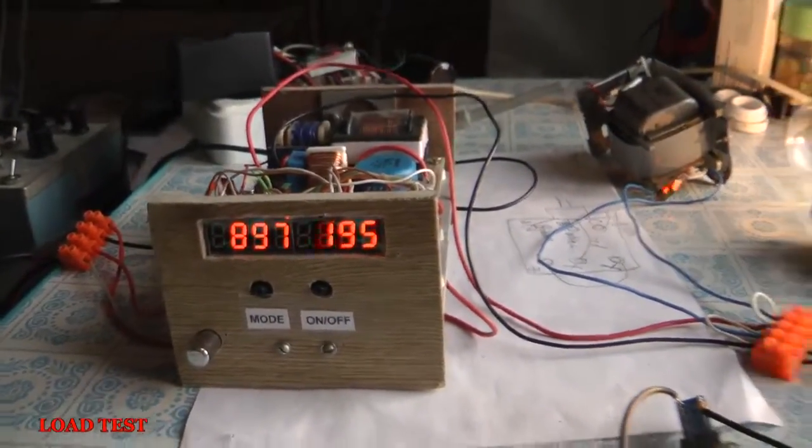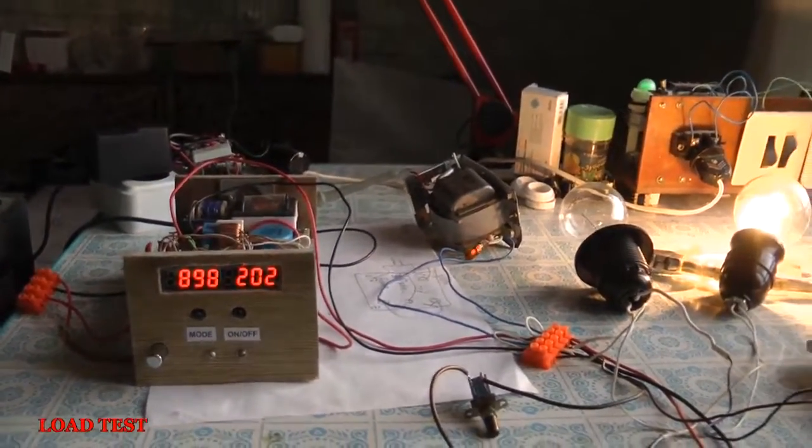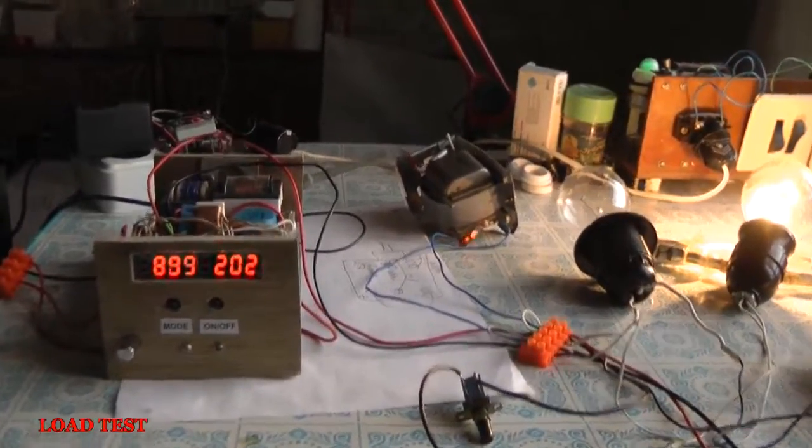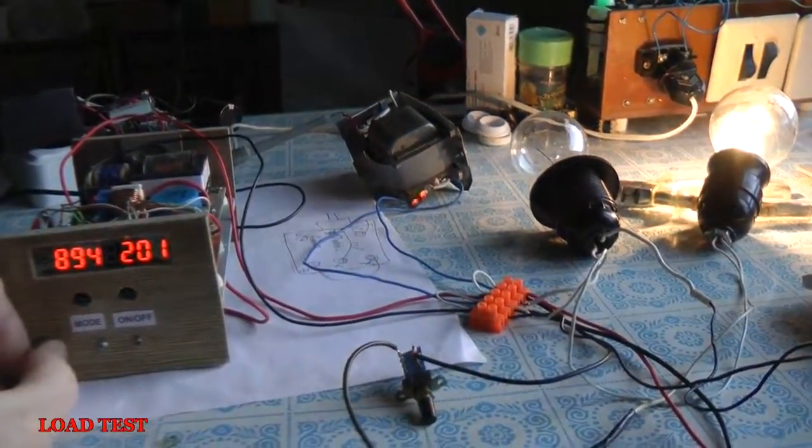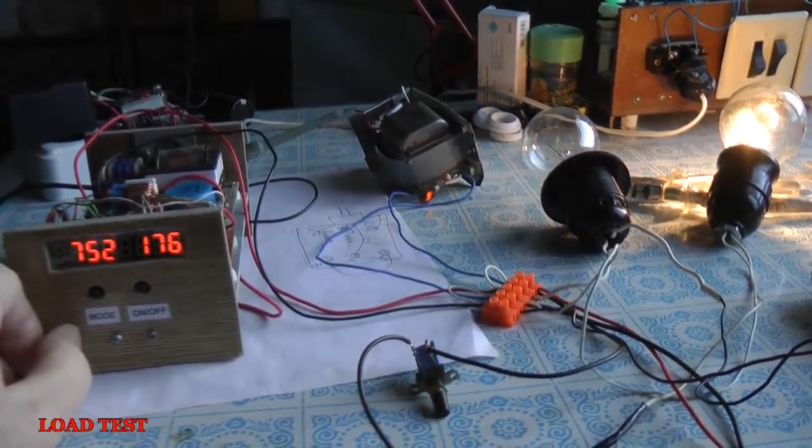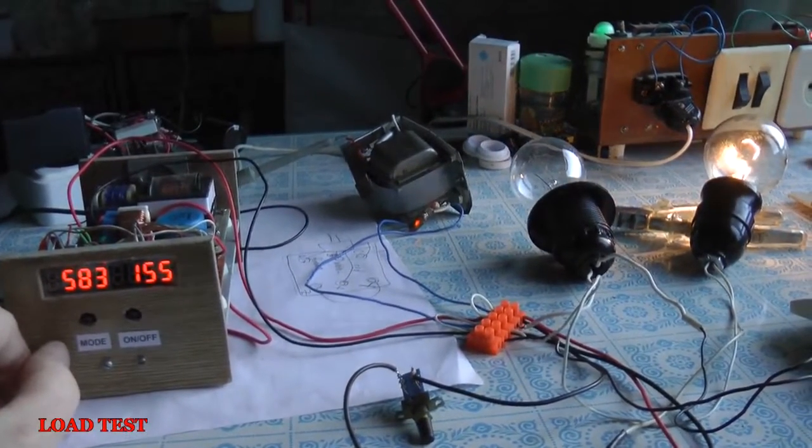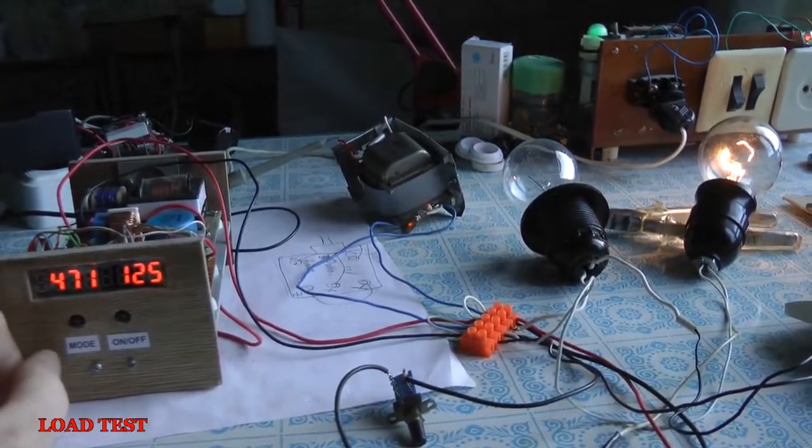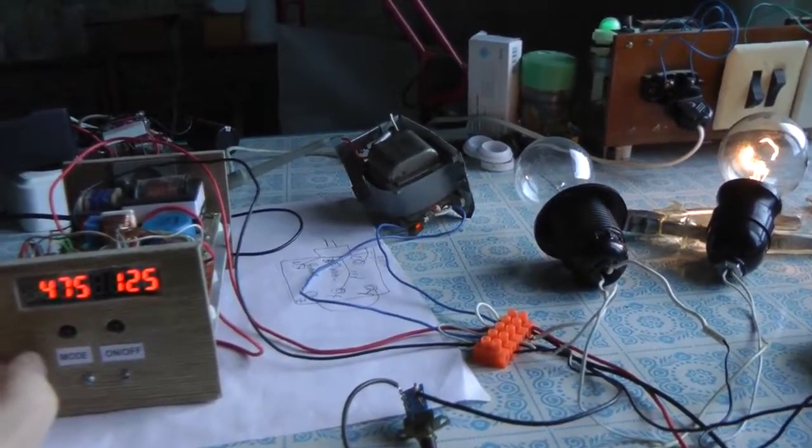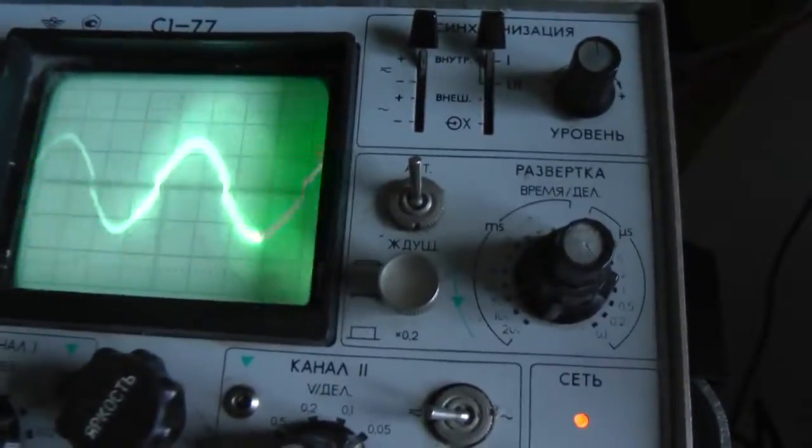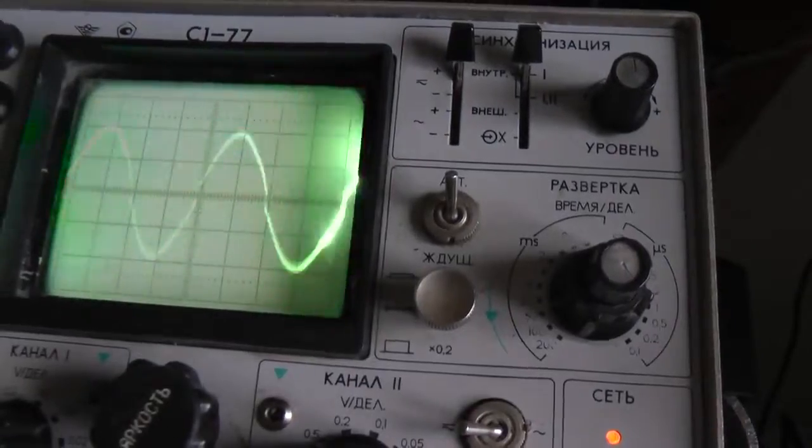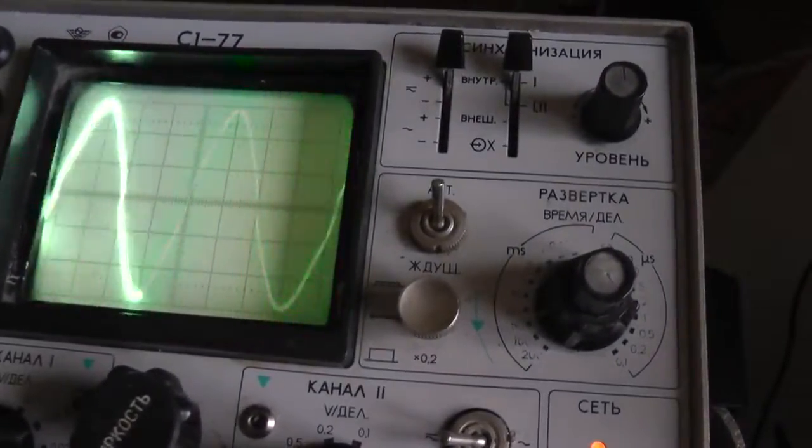In the load test, we will observe the output voltage waveform under different load conditions. We can adjust output voltage with potentiometer as required. As you see at the moment we have 60 watt incandescent lamp as a load. Now we can see the waveform for the given load.